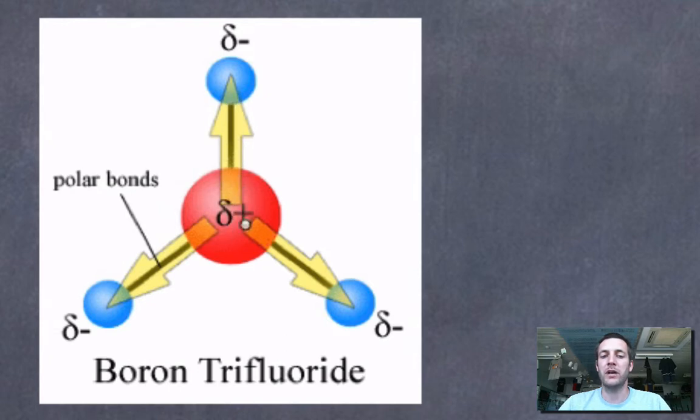And so the boron atom will take on a slight positive charge. This lowercase greek delta (δ) means a very small amount of positive charge. This doesn't become a positive ion, it just becomes slightly positively charged because it's lost control of some of its electrons. Similarly, the fluorine, which has got more electrons than it would normally have, or a greater share of electrons than it would normally have, becomes slightly negative.